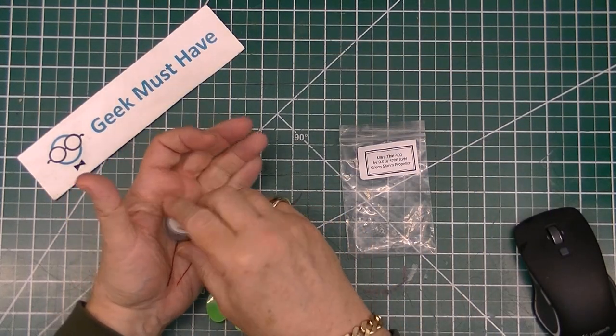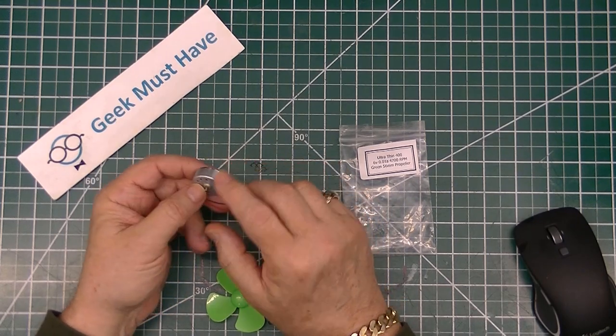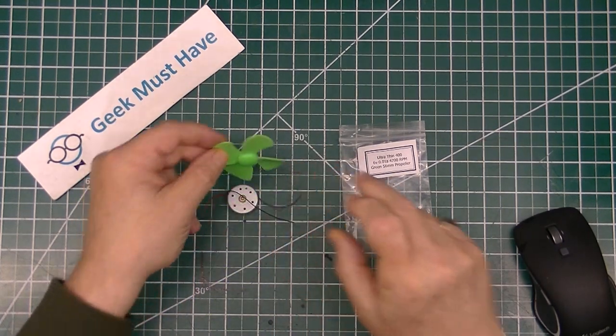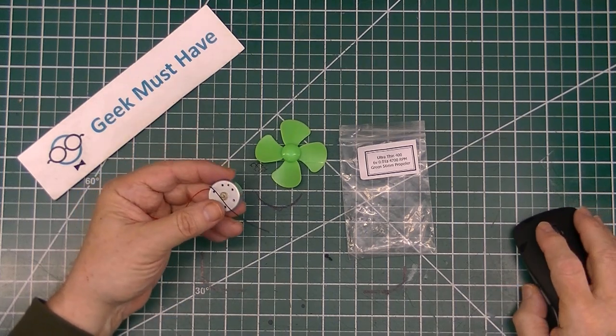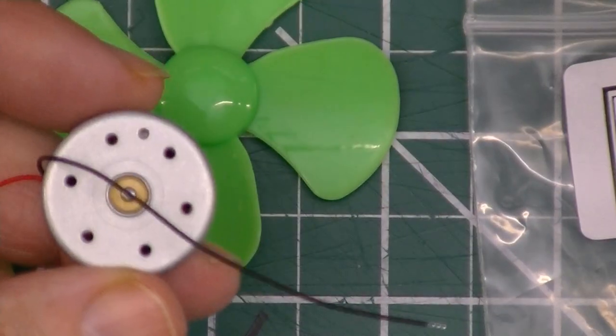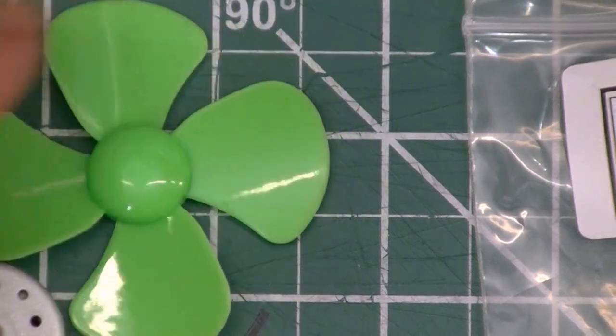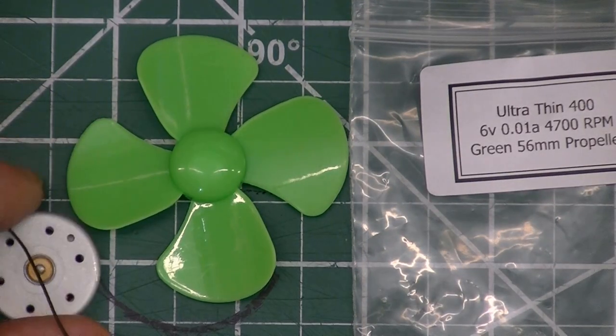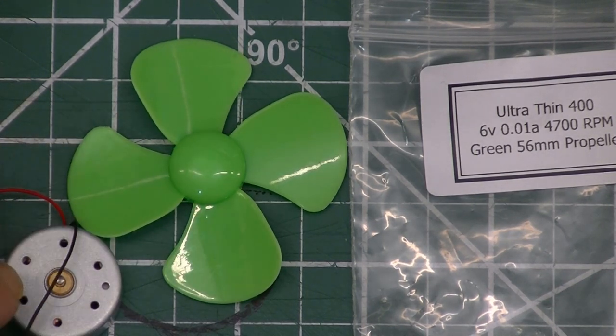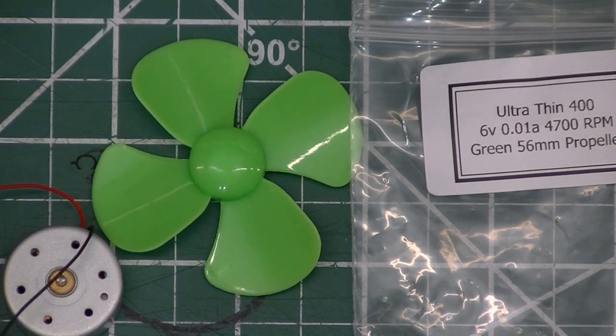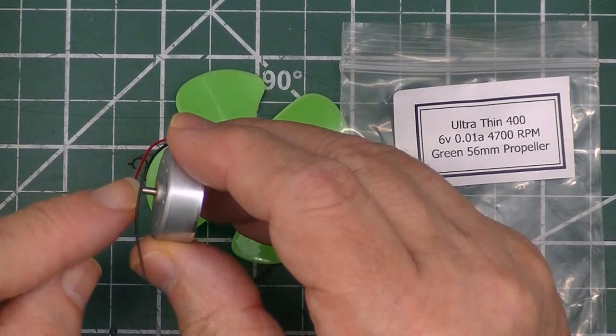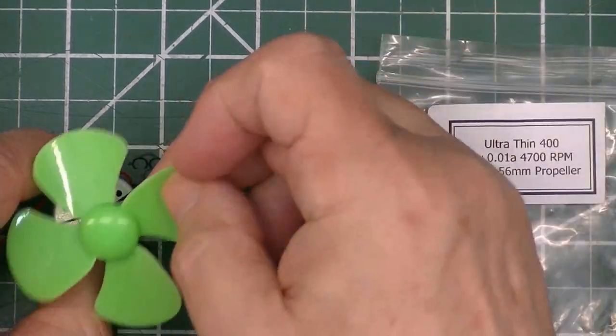This item is a very thin motor, it's called an ultra thin 400 motor. It comes with what they call a clover propeller. It has some mounting holes on the front. Runs on 6 volts and goes up to 4,700 RPM. Very low amperage on this one. It has a 3.5 millimeter shaft on it, that's the right size to fit this clover propeller.